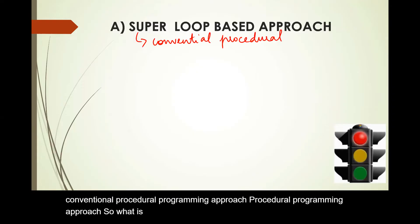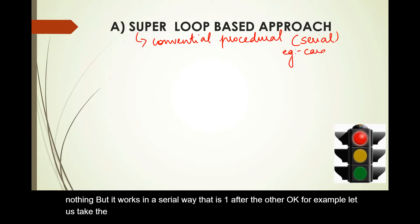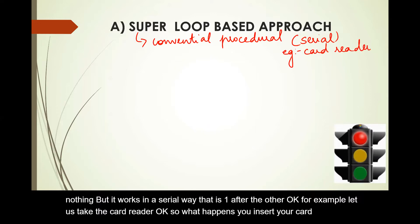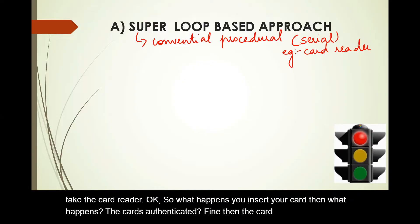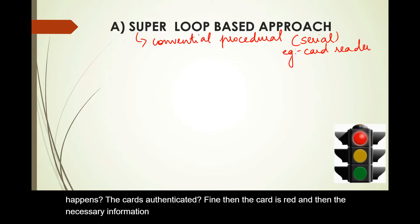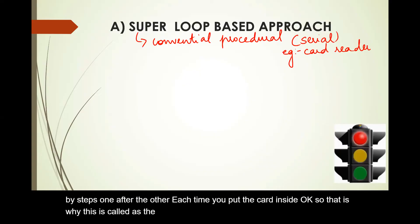The conventional procedural programming approach works in a serial way — one after the other. For example, let us take the card reader. You insert your card, the card is authenticated, the card is read, the necessary information is taken, and the process ends. This happens step by step, one after the other, each time you put the card inside. That is why this is called the conventional procedural approach, or the super loop based approach.